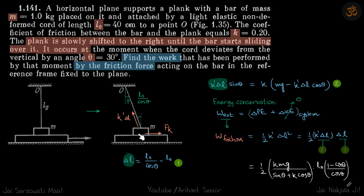Since it has just started sliding, the friction is at its maximum. Now friction is in the forward direction — you can imagine why: as you are moving this plank towards the right, the string is trying to pull the block back, and to avoid that, the friction will be in the forward direction.